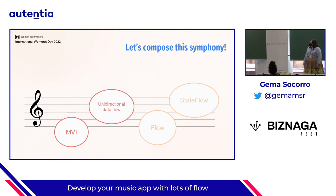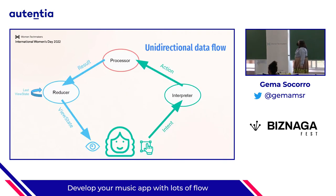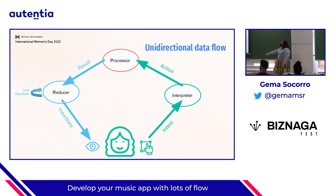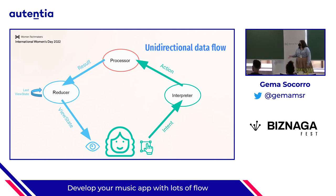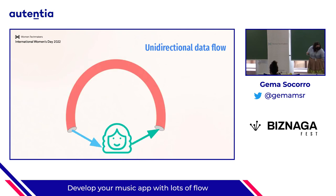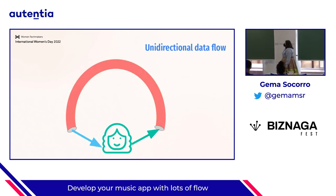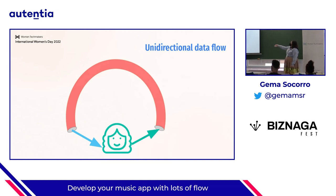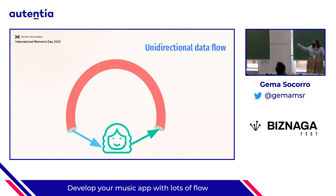This is what MVI is. Now let's go to unidirectional data flow. Unidirectional data flow is a concept that is really easy to see here because everything goes using the same direction and the same pipe. I always like to refer to it as a pipe. The user does actions, those events go through the whole flow, and the response arrives back to the user. Everything always follows this direction.